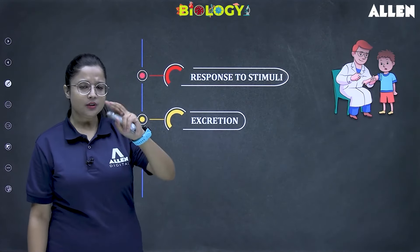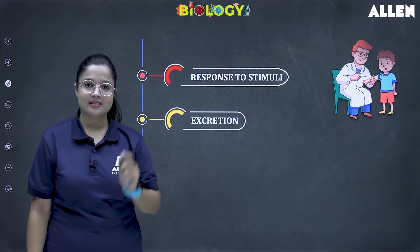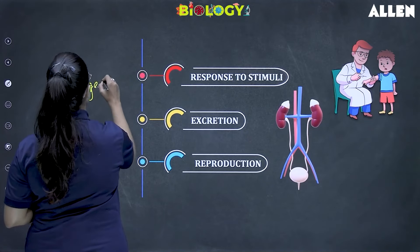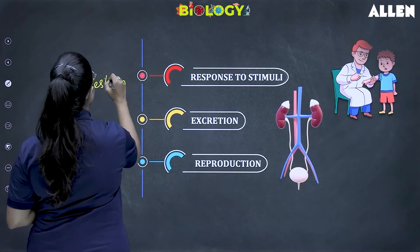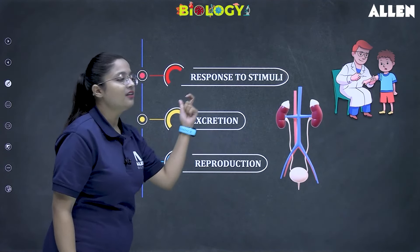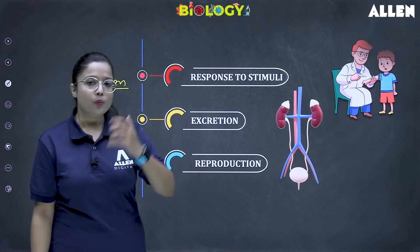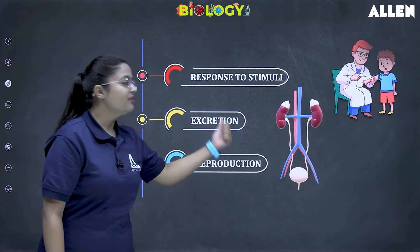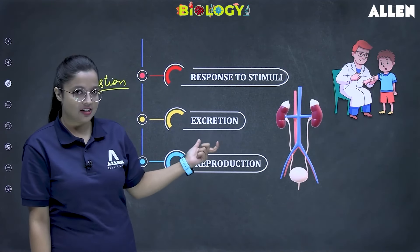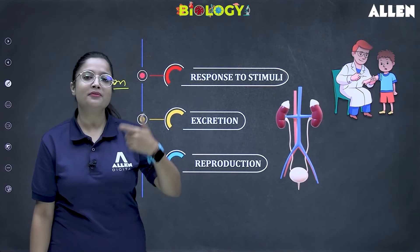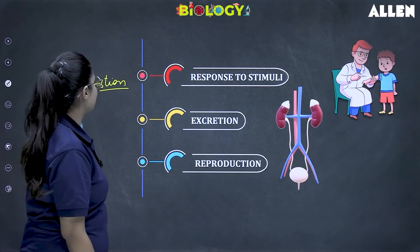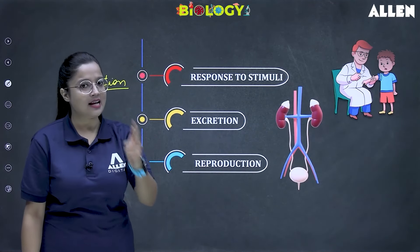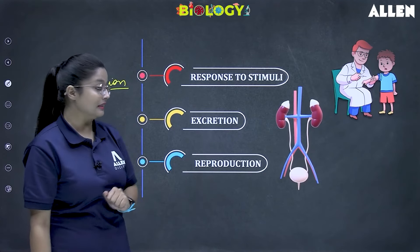Moving to excretion. Two terms you will study in further classes — excretion and ejection. In excretion, waste leaving the body in the form of urine — the removal of waste material from the body is very important. If waste leaves in the form of urine, that is called excretion. If waste leaves the body in the form of feces, that is called ejection. So removal of waste from the body is ejection and excretion, which living organisms perform.